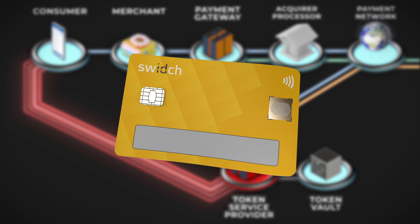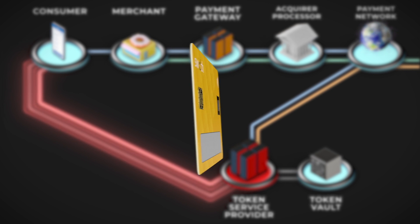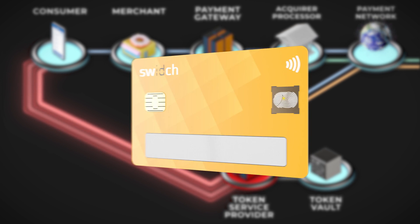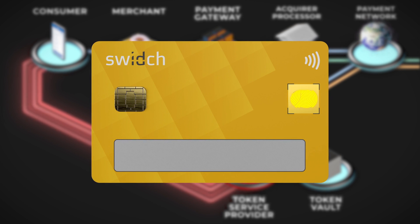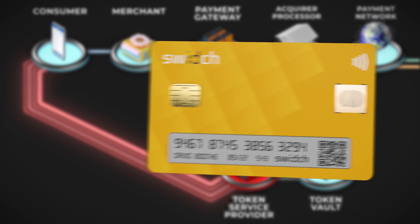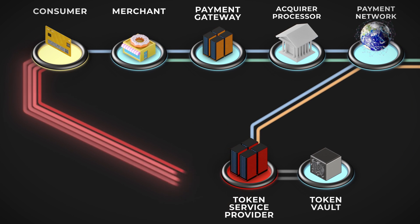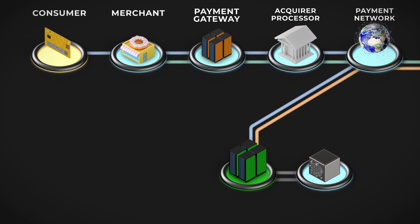Switch solves this problem of scale by generating unique payment information and authentication details locally. For payments, this is called a one-time authentication code. This is generated securely and without the need for the Switch device to be connected to the internet. The user's physical device is the token service.